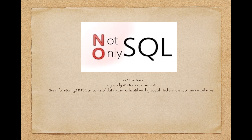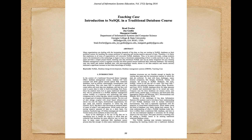Non-relational databases are becoming more popular among social media sites and e-commerce sites, as their less structured system allows them to store massive amounts of data. According to an article written by Brad Fowler, Joy Godin, and Margaret Getty in 2016, websites such as Facebook and Amazon have switched to NoSQL because of the ability to process data faster than a traditional relational database.